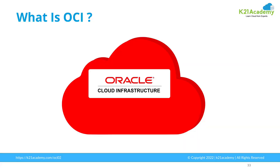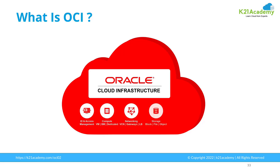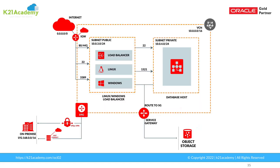There are five core services that you must learn in Oracle Cloud Infrastructure. That includes Identity and Access Management, Compute, Networking, Storage and Databases. Networking, out of these, is one of the most important and at the same time most challenging service that you must know.